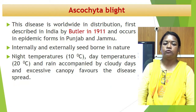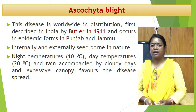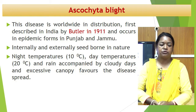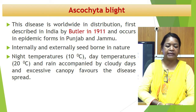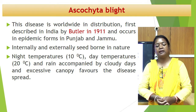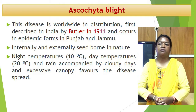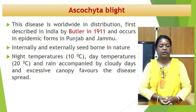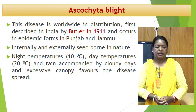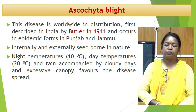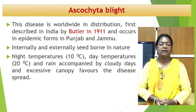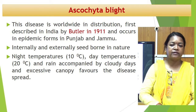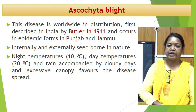Next is Ascochyta blight. It is worldwide in distribution and was first described in India by Butler in the year 1911. It occurs in epidemic form in Punjab and Jammu. It is internally and externally seed-borne in nature. Night temperature of 10°C and day temperature of 20°C, with rain accompanied by cloudy days and extensive canopy, favour the spread of disease.